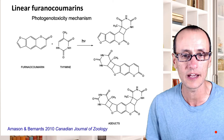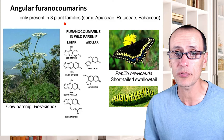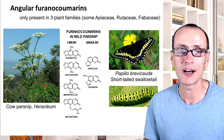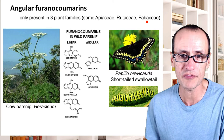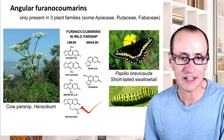Angular furanocoumarins also have this cross-linking property, but are only present in three plant families: the Apiaceae, the Rutaceae, and the Fabaceae. The Apiaceae includes things like carrots, parsnips, and hemlocks — formerly the umbelifer family, with their umbel-like flowers. The Rutaceae is citrus. The Fabaceae are the legumes, the bean family. And as you can imagine, there are some herbivores like short-tailed swallowtails that can feed on these particular plants.